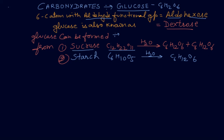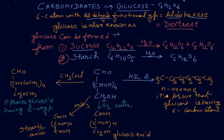Next, we will discuss the chemical reactions of glucose and its open chain structure. The general formula of glucose written in expanded form is: CHO, (CHOH)4, then CH2OH. This is the open chain structure, which I will explain more in the next class.